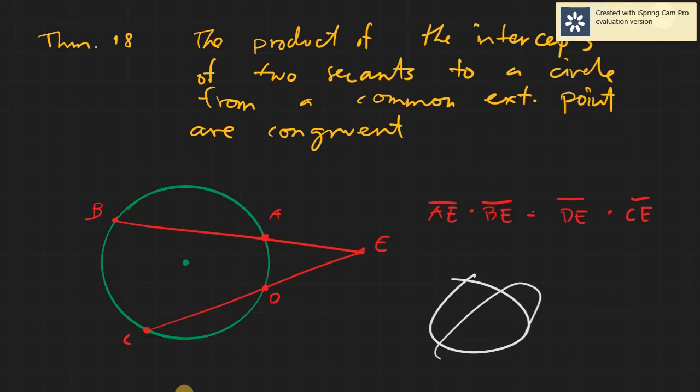You cannot have like this. It's not a straight line. So this is a secant. And this segment BE, B and E, is a secant. And then segment CE is a secant.